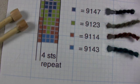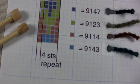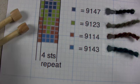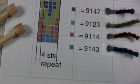This stranded color pattern has only two colors in every row, so it's a great one to start with. Very basic way to start learning about doing color work.